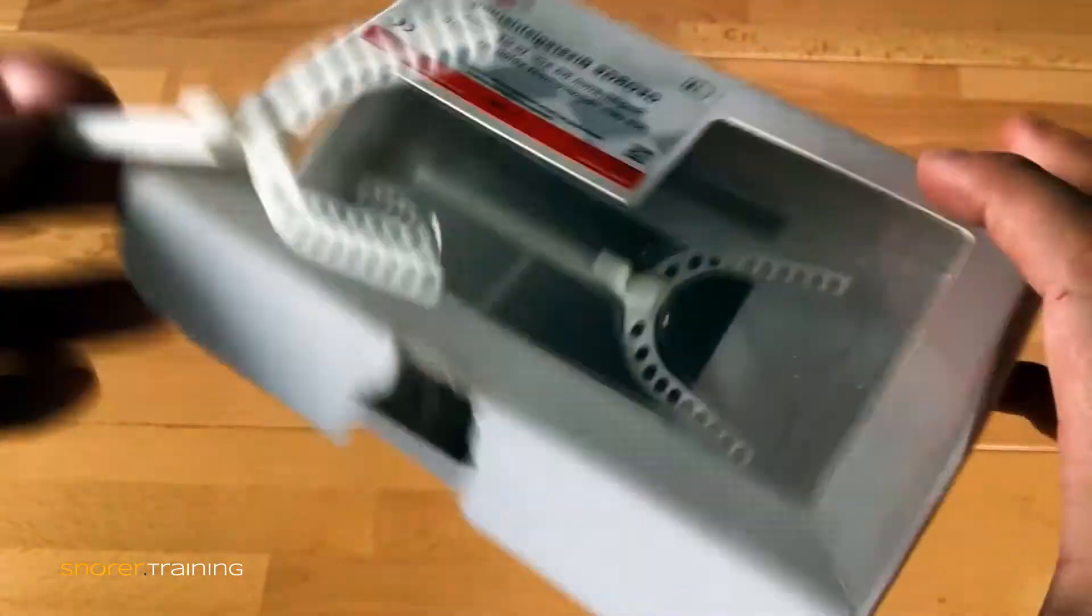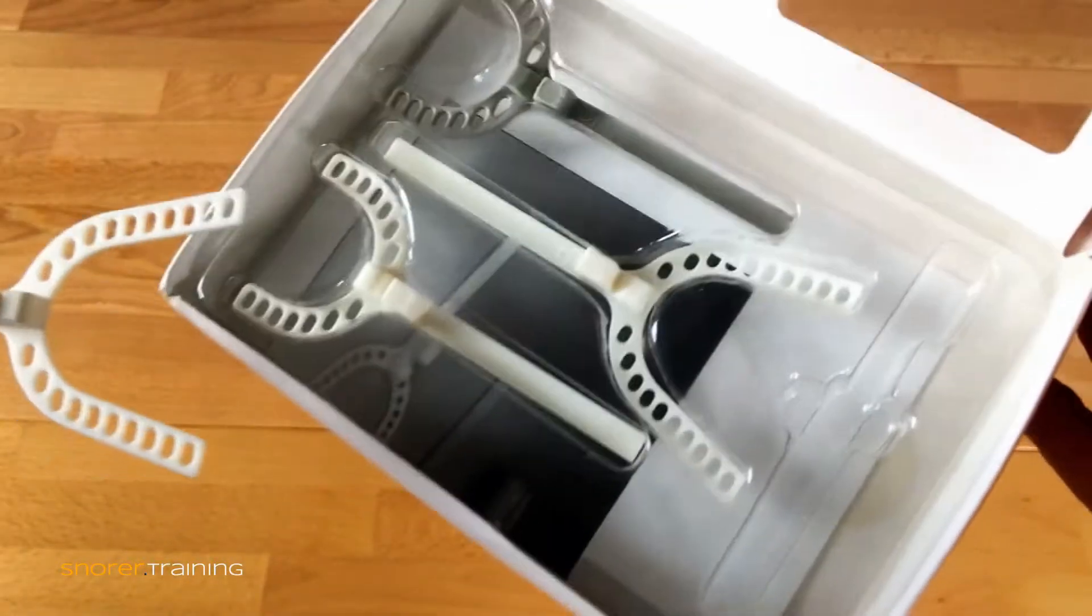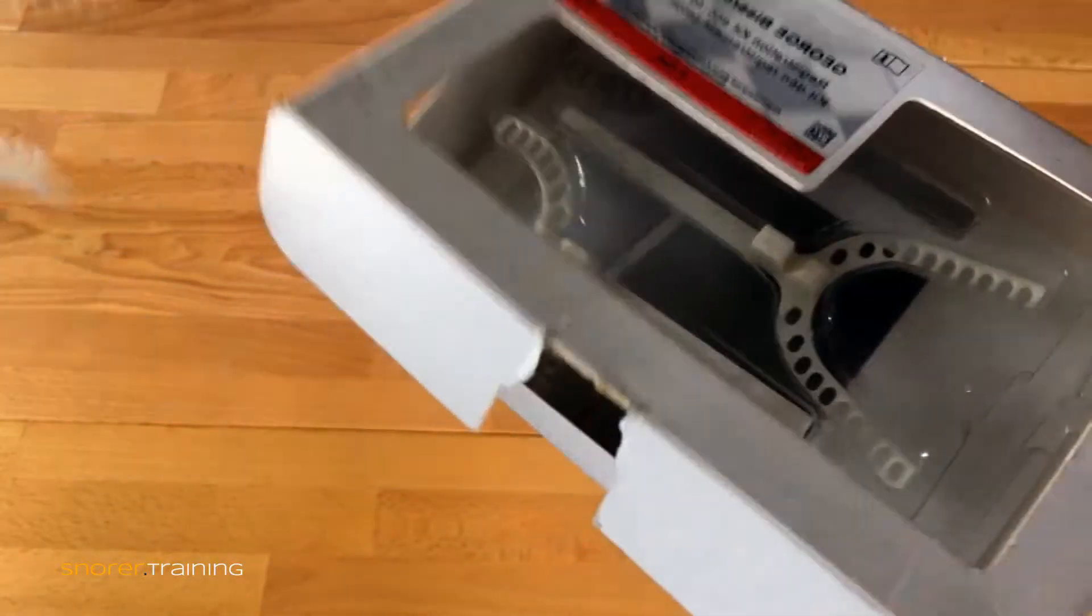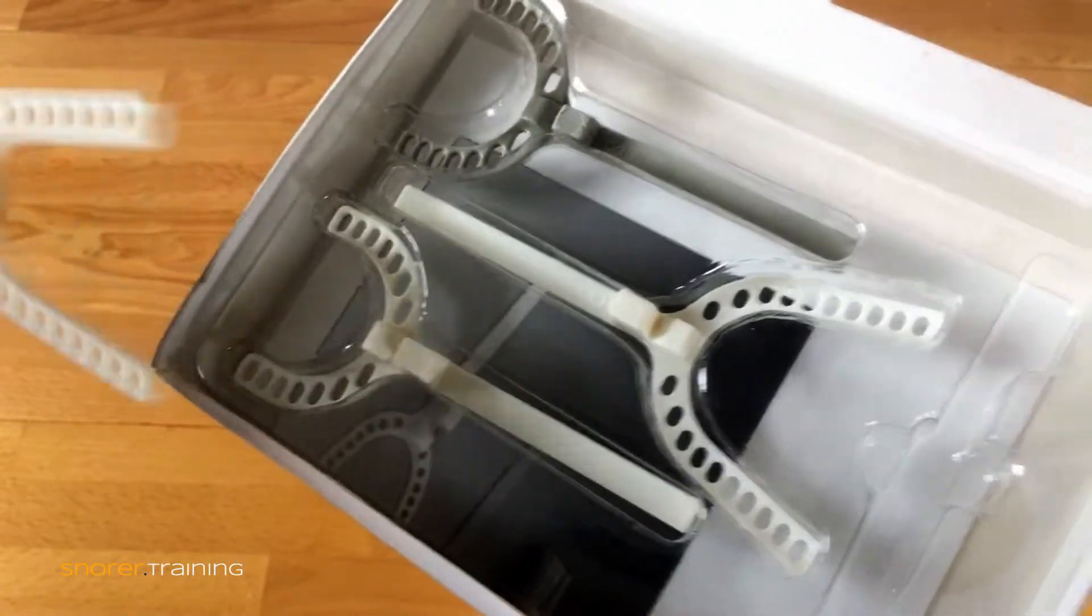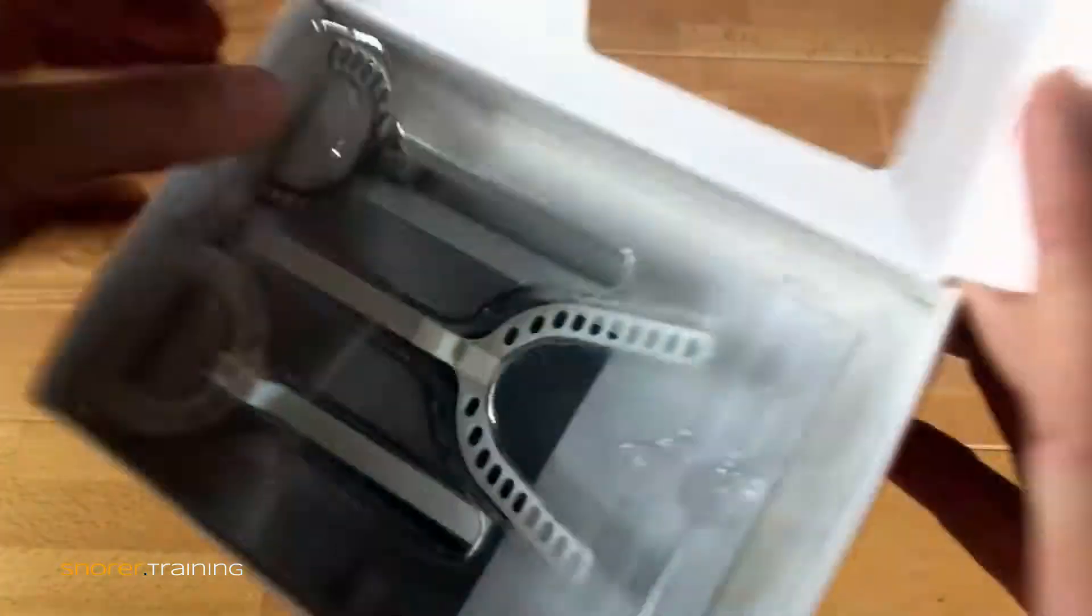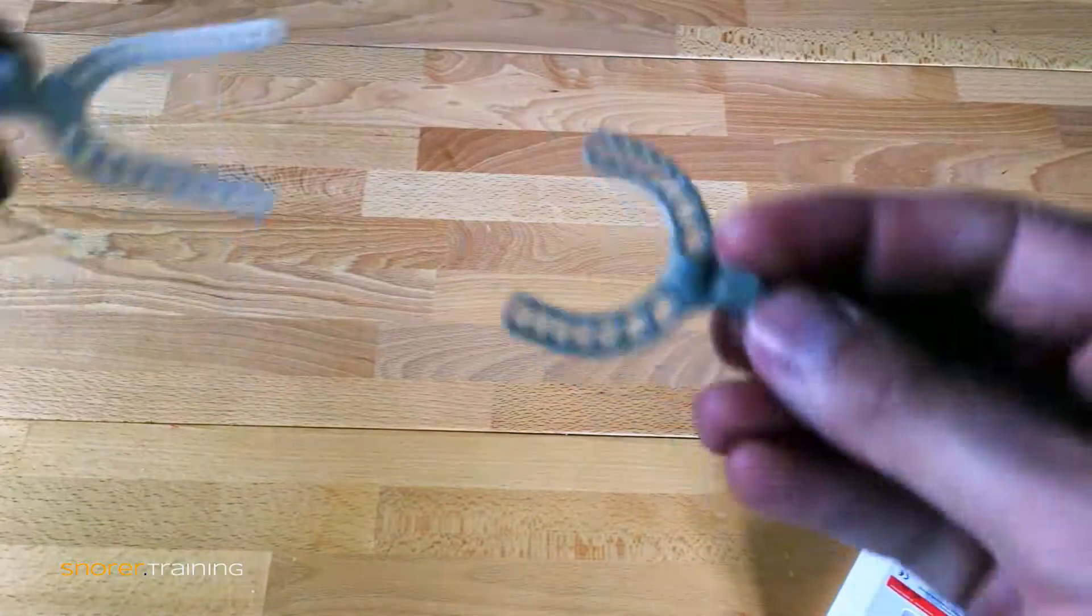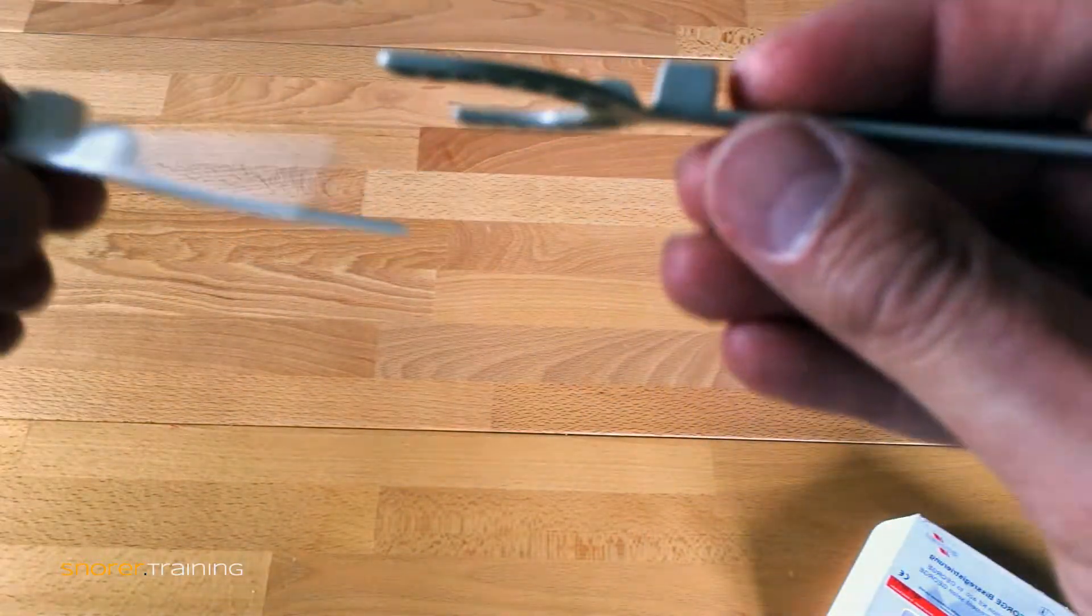Select your bite fork. They come with a range, but this is originally designed for children. We're going to use probably the white bite fork, sometimes the gray bite fork. They vary in thickness.